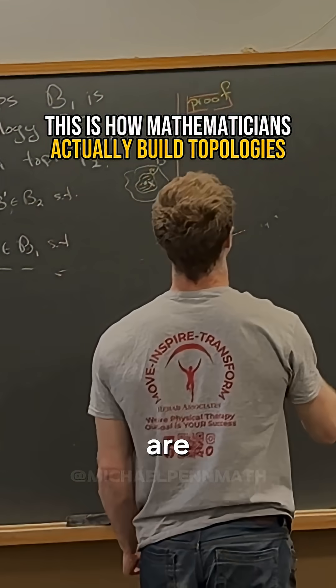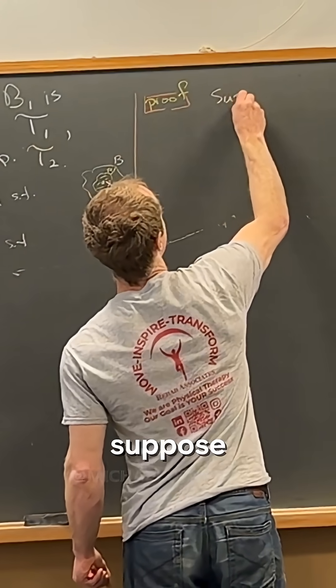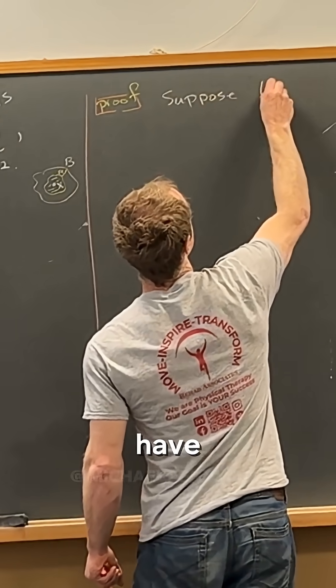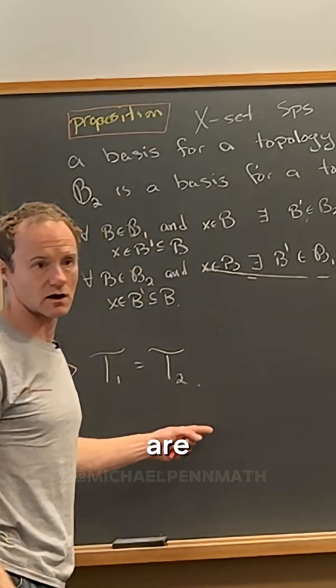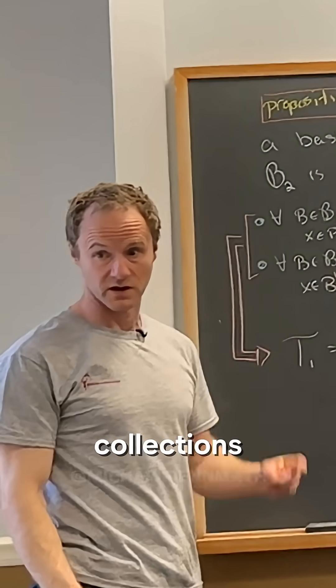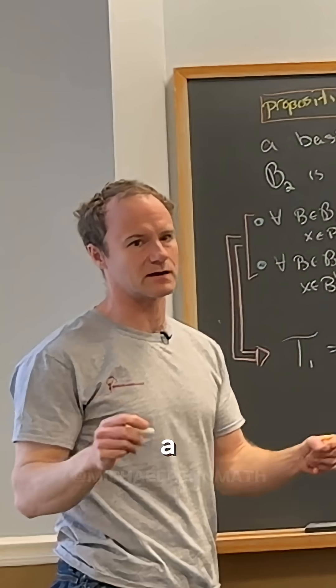So how do we show that topologies are the same? Well, let's suppose that we have u is an element of t1. Remember, these are collections of subsets. They're collections of subsets of x satisfying a bunch of conditions.